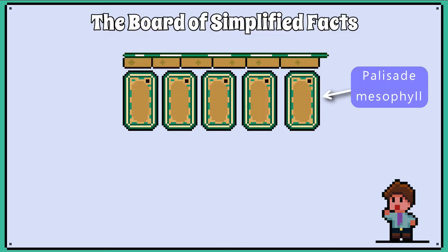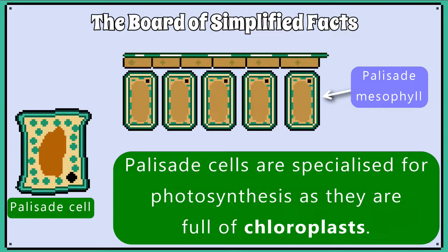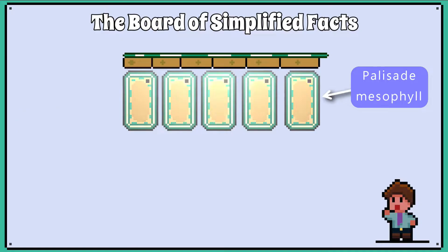Next is the layer known as the palisade mesophyll layer. This layer is packed with vertically orientated palisade cells. Palisade cells are specialised for photosynthesis as they are full of chloroplasts.